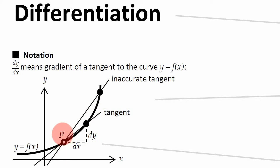So if I want to find out the gradient at this point P, I draw a tangent at that point P, and the gradient of that tangent is the gradient at that point P.